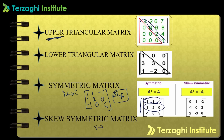For skew symmetric matrix, if you interchange rows and columns, the resulting matrix has the opposite sign. For example, consider a matrix with elements 0, 1, minus 2; minus 1, 0, 3; 2, minus 3, 0. After transpose, the matrix equals minus A. So the condition A transpose equals minus A defines a skew symmetric matrix.